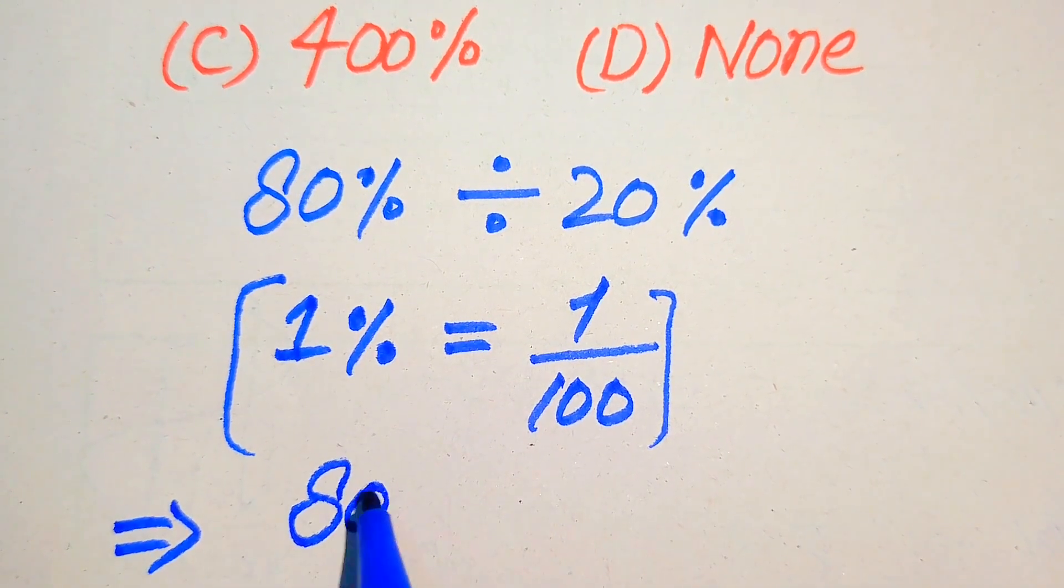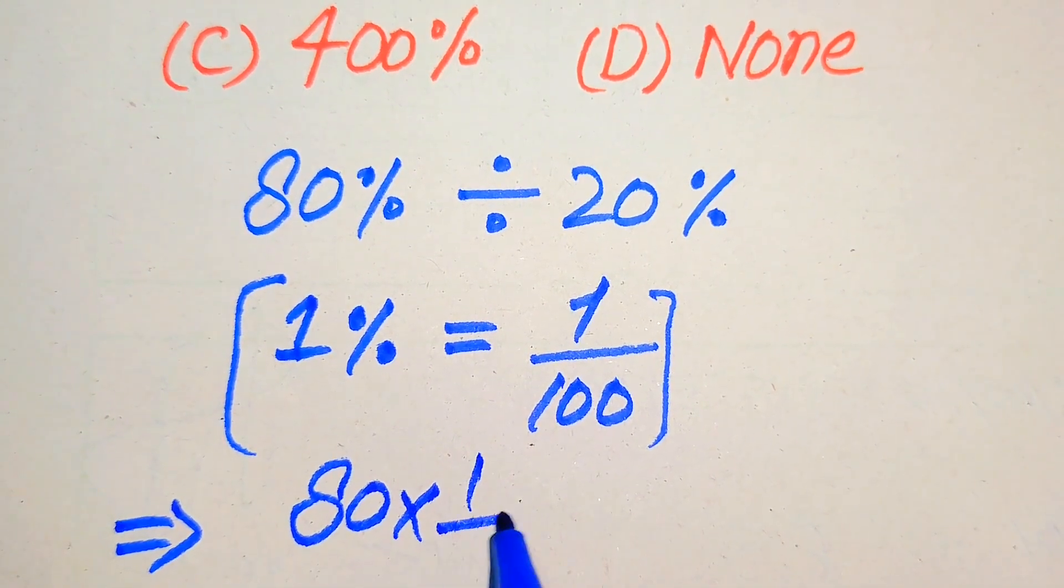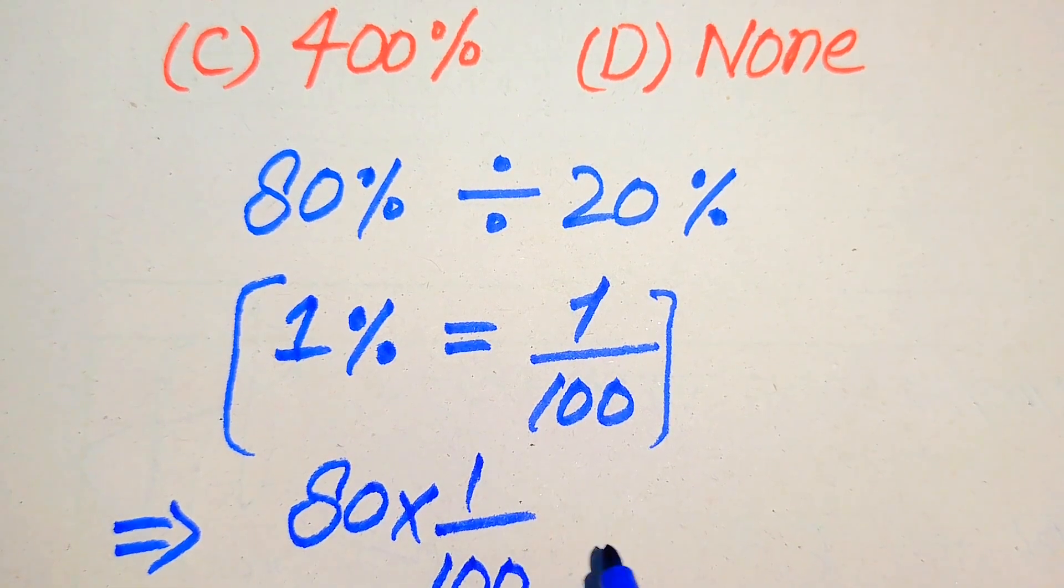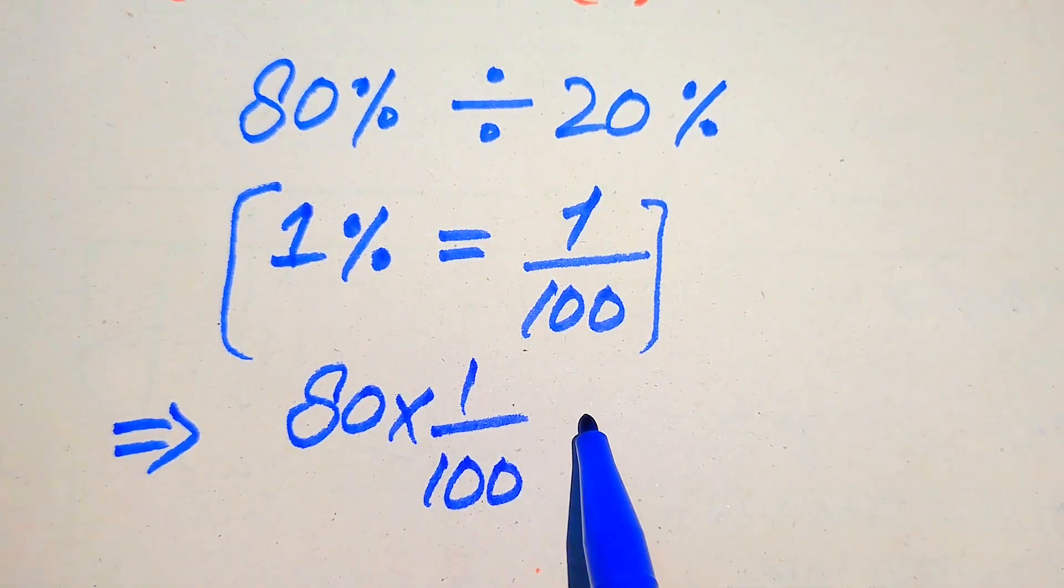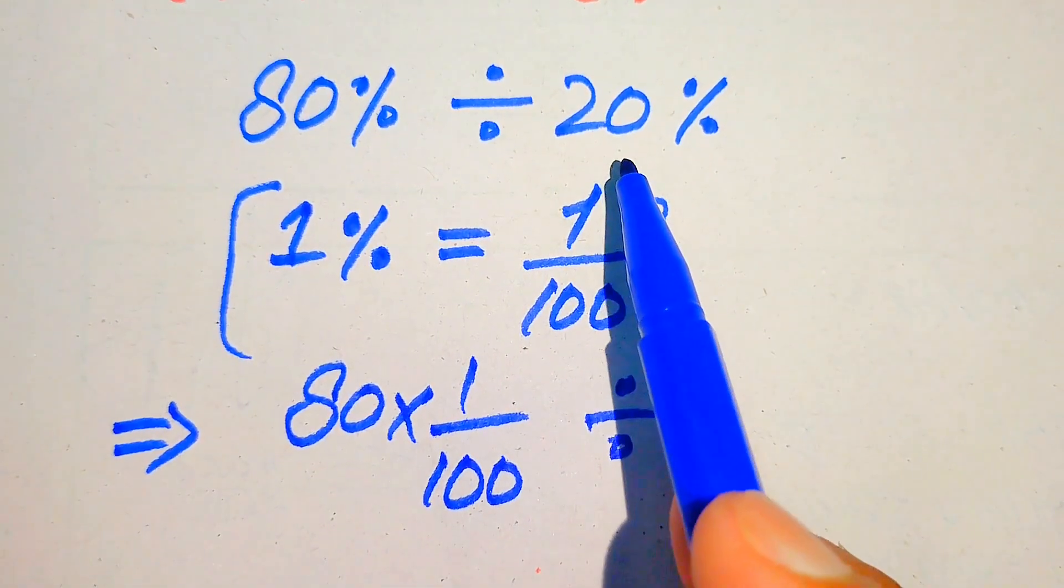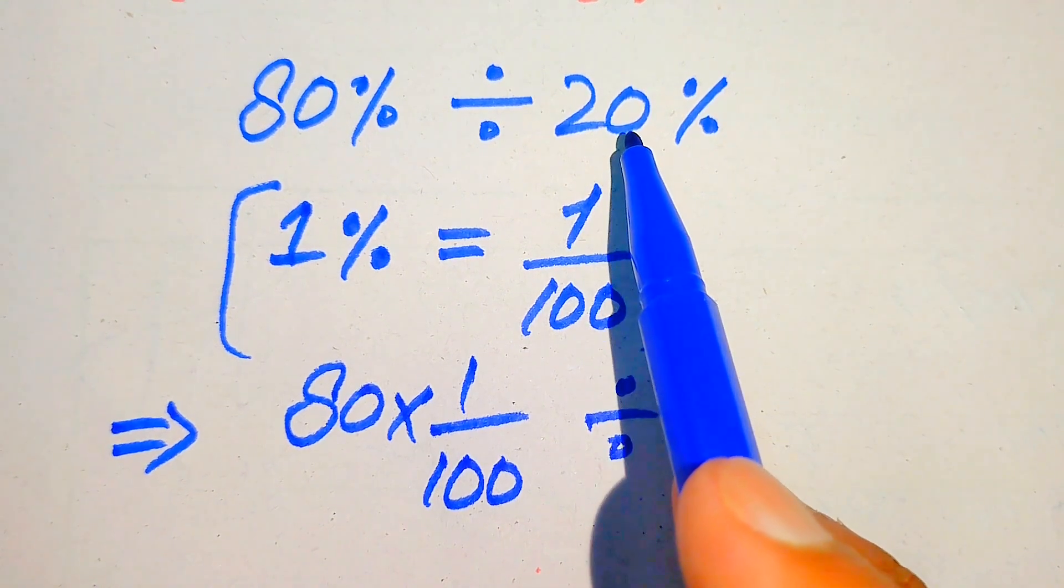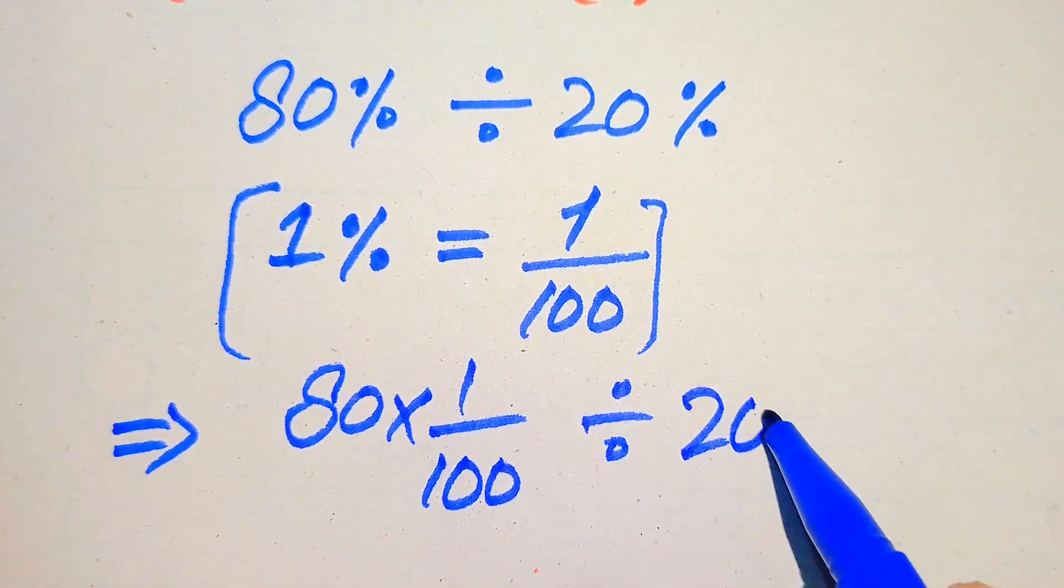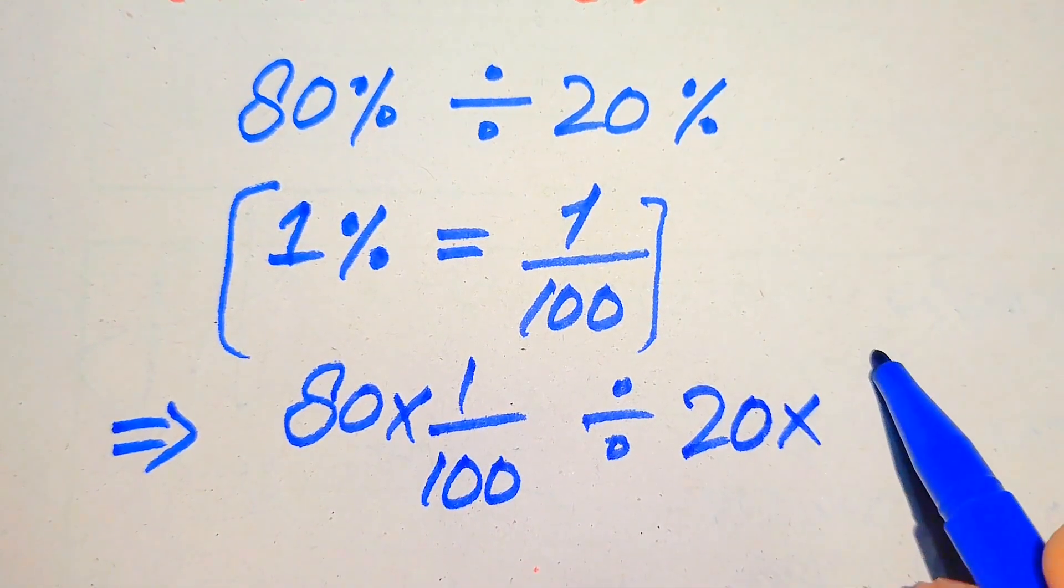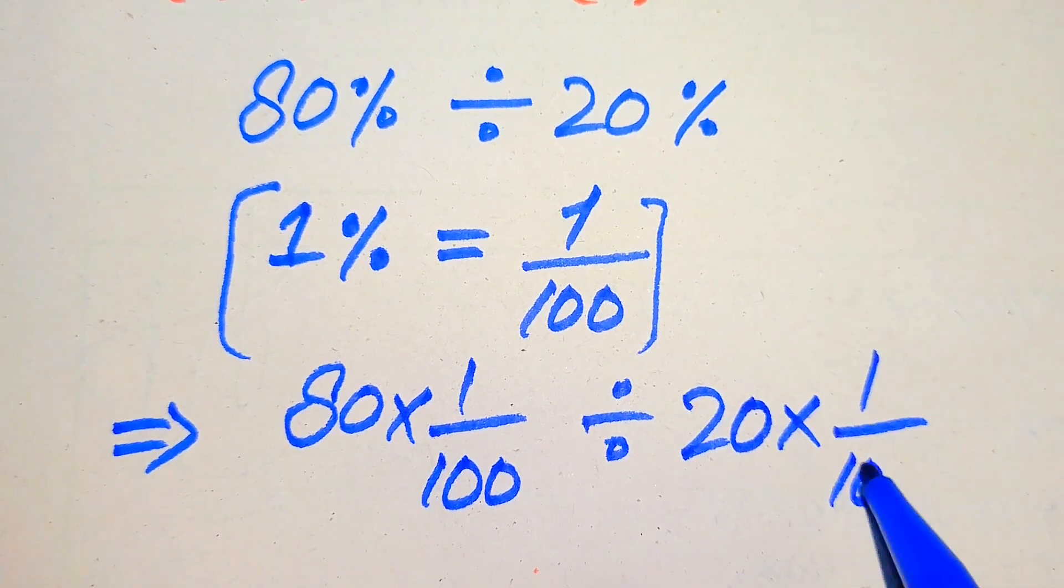When you remove this percentage sign, we multiply it with 1 over 100, and it is divided by—again we remove the percentage sign of this number—20 multiplied by 1 over 100.